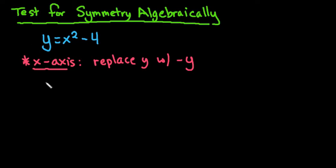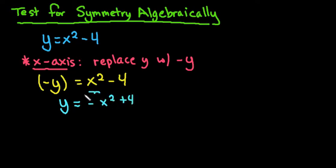So for this one, what we're going to do is replace y with negative y. So instead of writing y, I'm just going to write negative y and see if I get the same equation. So if I solve for y right here, because it's a negative, I would need to divide everything by negative 1 to get it by itself. So when I do that, I end up with y equals negative x squared plus 4.